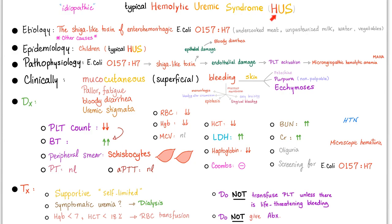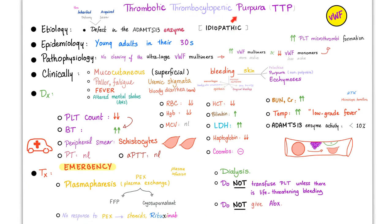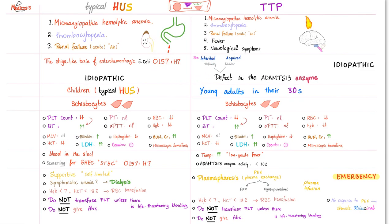We have talked about typical HUS in detail in my previous video in my bleeding and coagulation playlist, so please watch it. We also covered TTP — thrombotic thrombocytopenic purpura. Remember ADAMTS-13. TTP is a freaking emergency requiring emergency plasmapheresis or plasma exchange, but HUS is not an emergency — it's usually a self-limited disease.